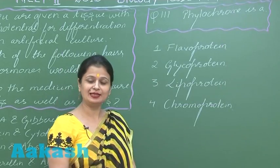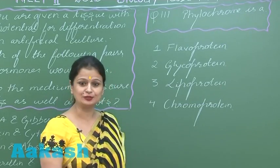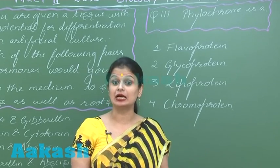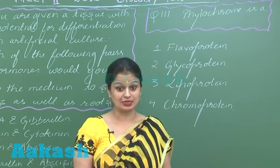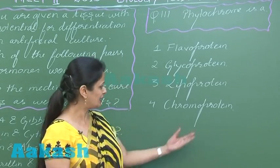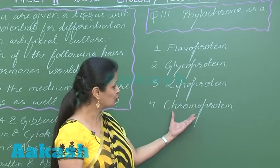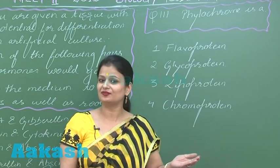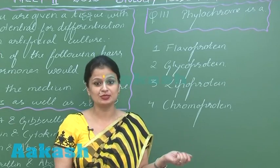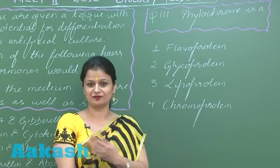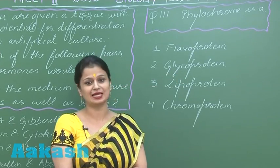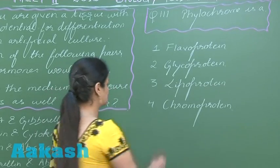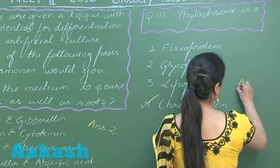Question 111. Phytochrome is a conjugated protein which is colored. Because it is colored, we call it a chromoprotein. The different forms of phytochrome are responsible for the absorption of red light and far-red light. So the right option for this question is option number 4.